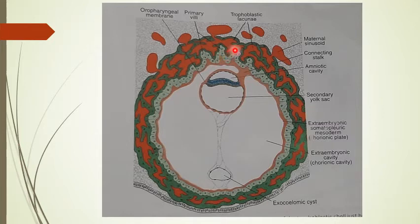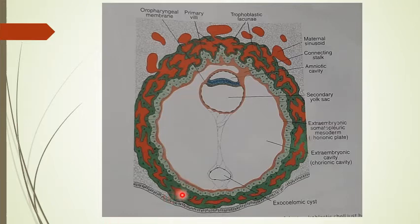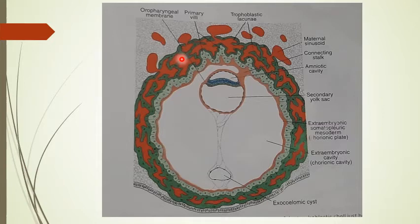Outside the syncytium, multiple lacunae or gaps appear — vacuoles within the syncytium. These vacuoles fuse with each other, creating a large space in the syncytium which later acts as the intervillus space between the villi. Additionally, the syncytiotrophoblast is the eroding layer which erodes the decidual villi and continues penetrating into the decidua.